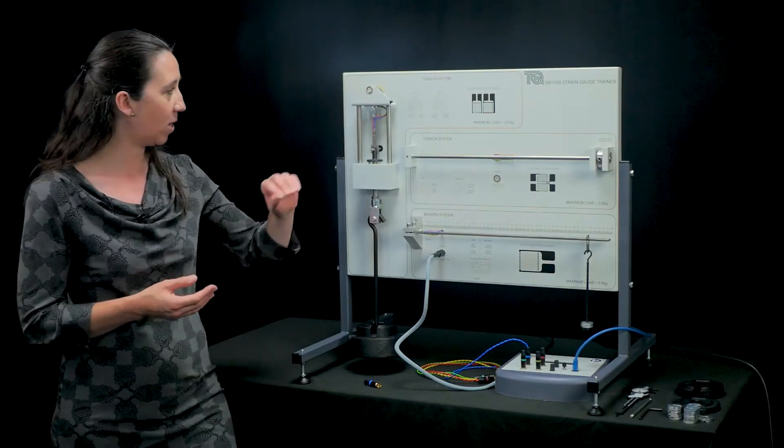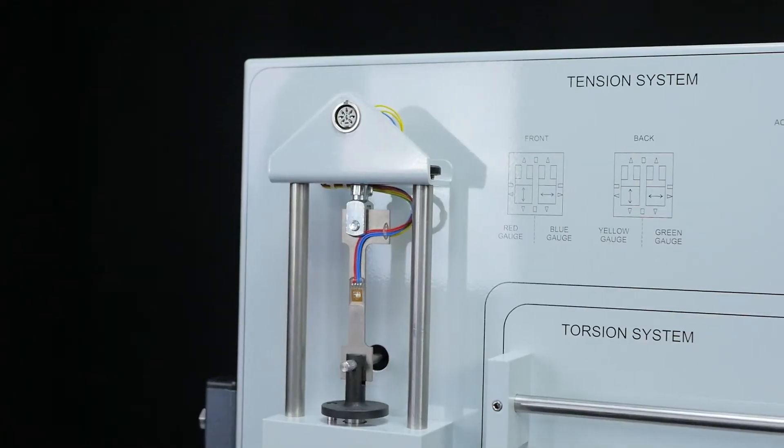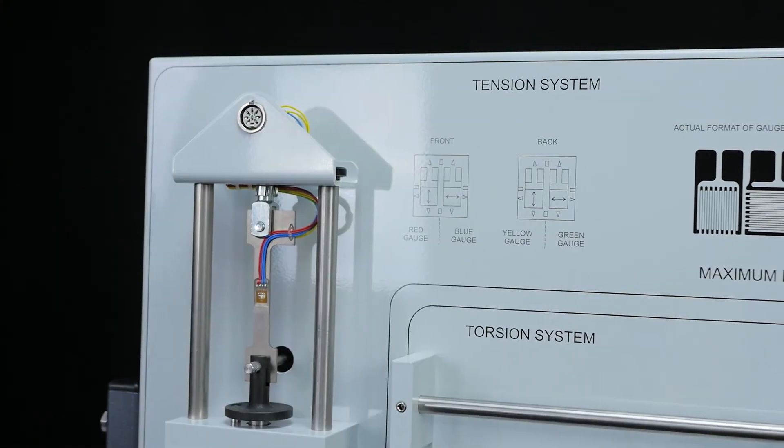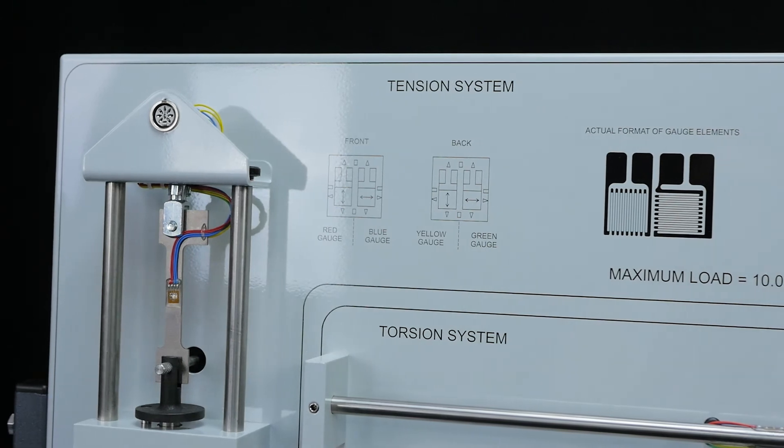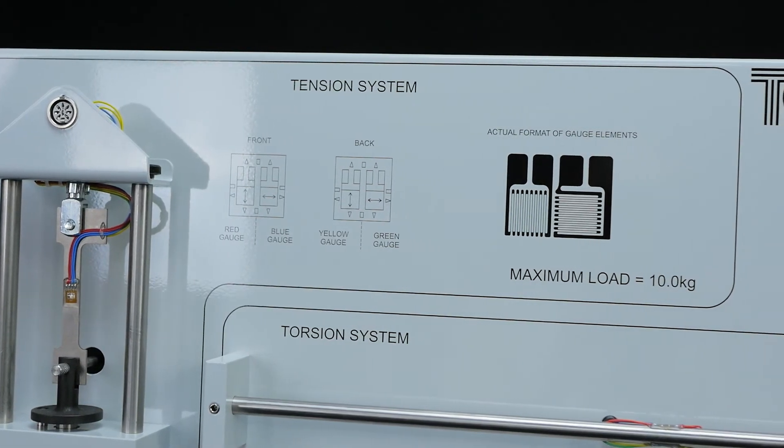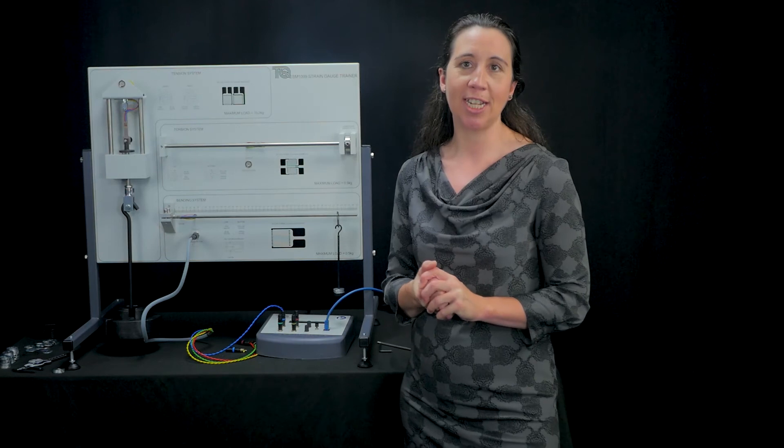Lastly, you might have noticed these mimic diagrams on the back plate that show you what each gauge looked like and how it connects and how it fits on each structure. That's it for the strain gauge trainer today.